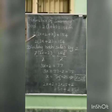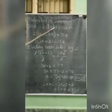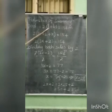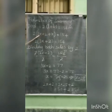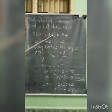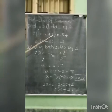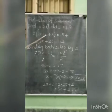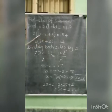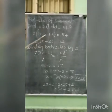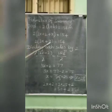In the next step, substitute the values of L and B. L means length, B means breadth of the swimming pool. The length is 2x plus 2 and breadth is x. So we get: 2 into (2x plus 2 plus x) equal to 154. Simplifying inside the bracket: 2x plus x is 3x, so 2 into (3x plus 2) equal to 154.